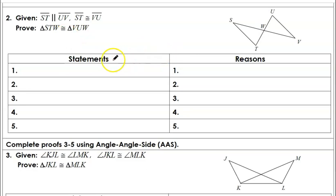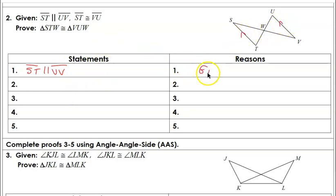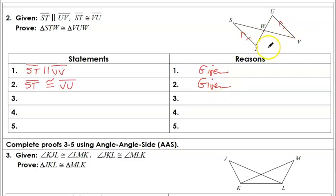Let's go ahead and establish the given statements. We're told that side ST is parallel to UV, so we can go ahead and make our arrow markings. We're also told that those two sides are congruent, and we have to establish Angle-Side-Angle — we've got the side and we need two angles on either side. To establish Angle-Side-Angle it has to be two angles and the included side.